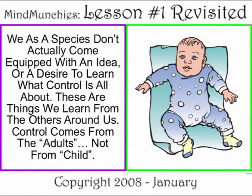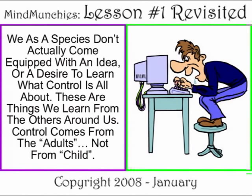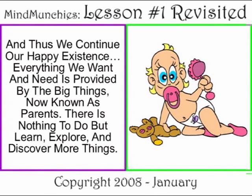We as a species don't actually come equipped with an idea or desire to learn what control is all about. These are things we learn from the others around us. Control comes from the adults, not from the child. And thus we continue our happy existence. Everything we want and need is provided by the big things, now known as parents. There is nothing to do but learn, explore, and discover more things.